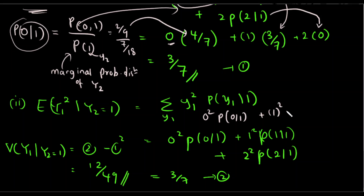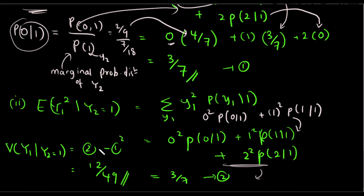p(0,1) is equal to the value. The expectation of y1 squared given y2 equals 1 can be calculated, and from that we can calculate the variance. The conditional variance of y1 given y2 equals 1 is computed using this result.